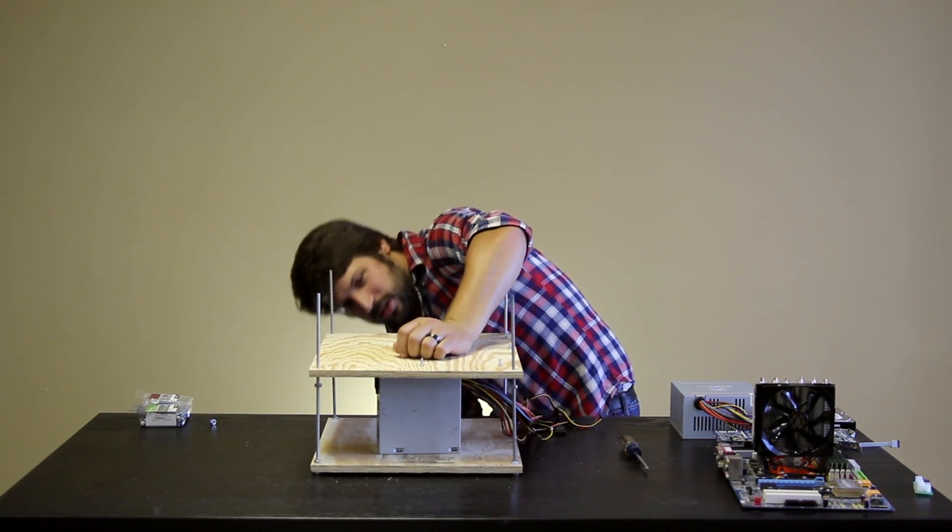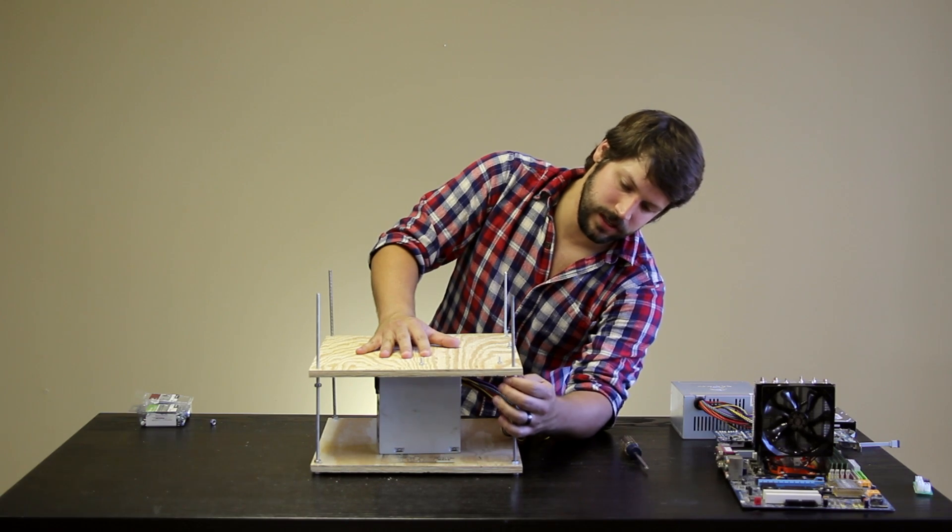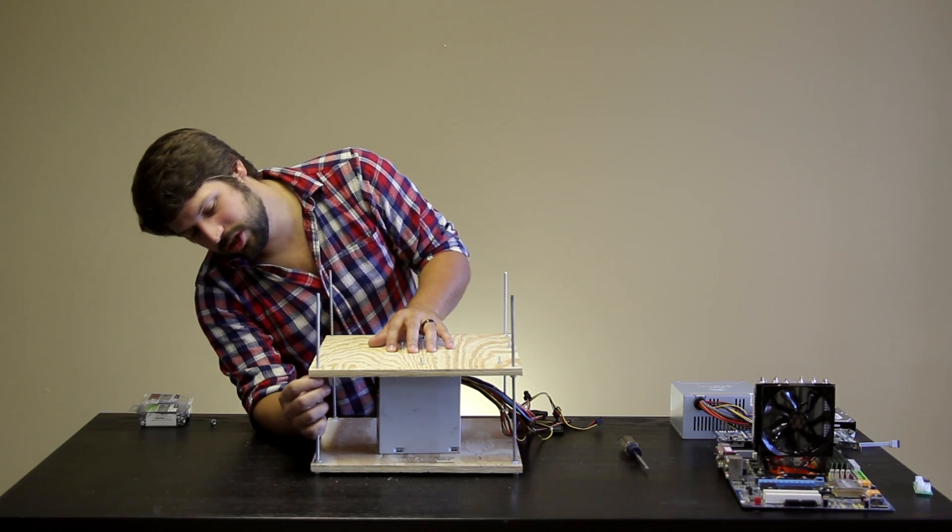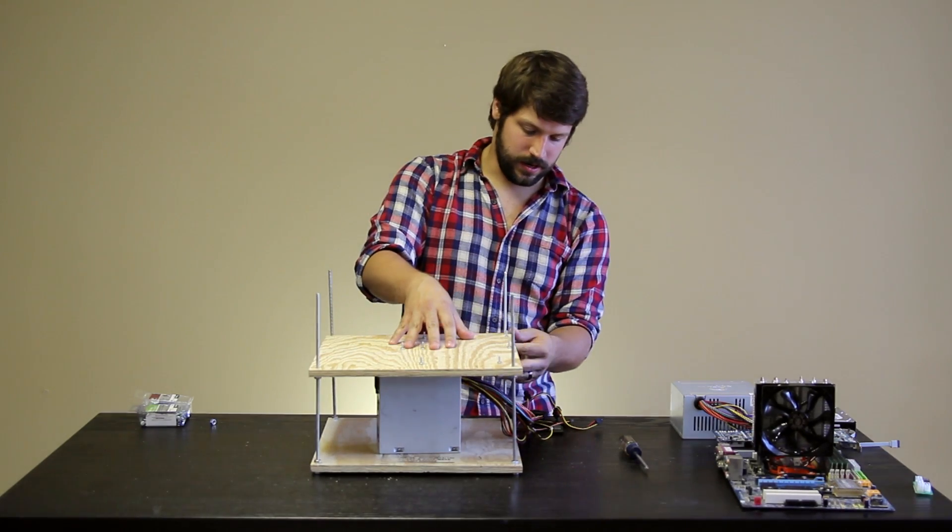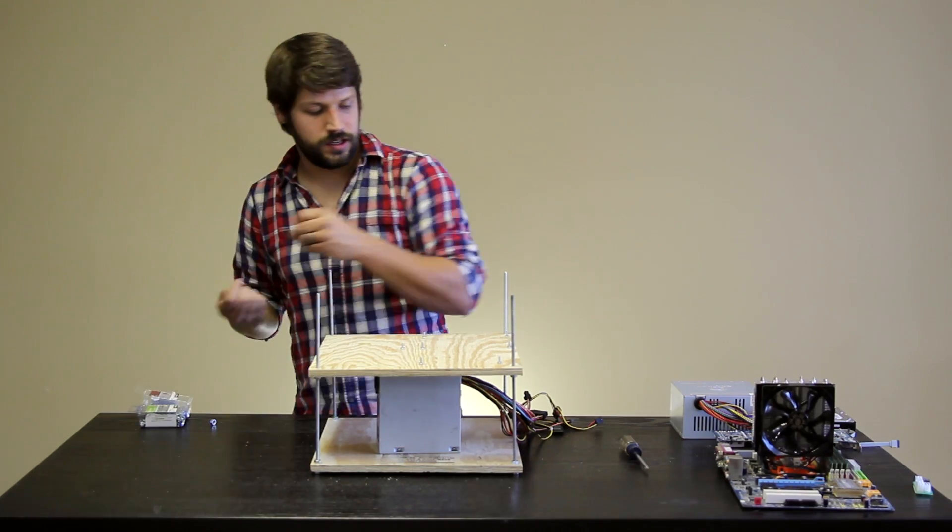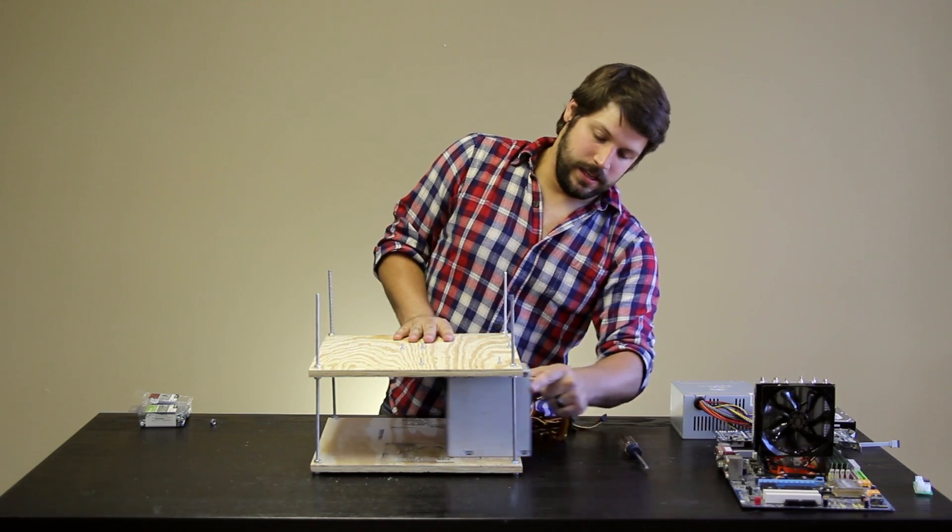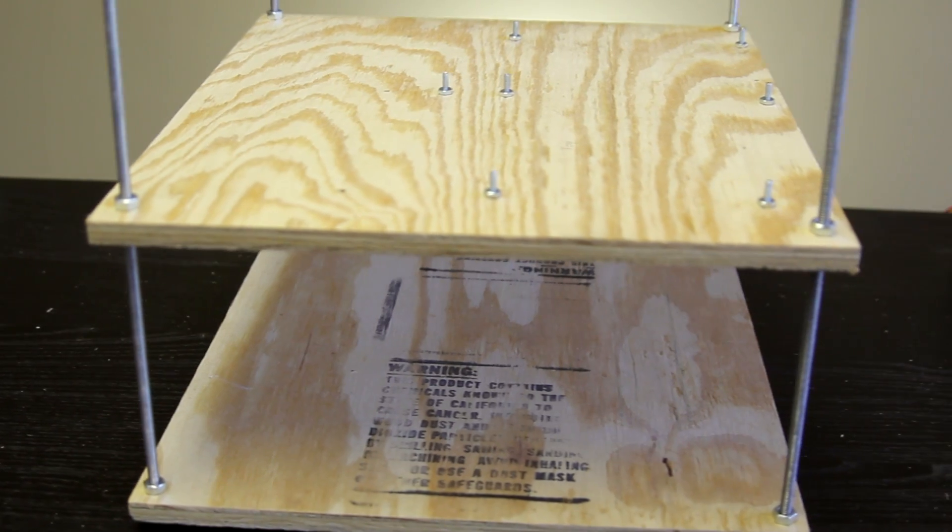Then you check, make sure it's sitting there kind of flush, and then you bring up your post stands to be just touching the bottom of your top piece of plywood. You don't want to push it up, otherwise it's going to cause it to be uneven. You just want it to be sitting there. Then you want to take four more nuts and thread them on the top. This is your result. And now that we have our test bench built, we're actually going to put a computer on it.